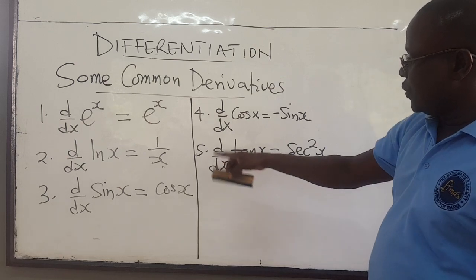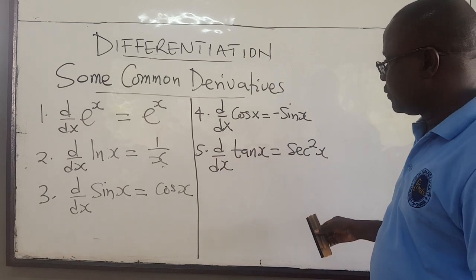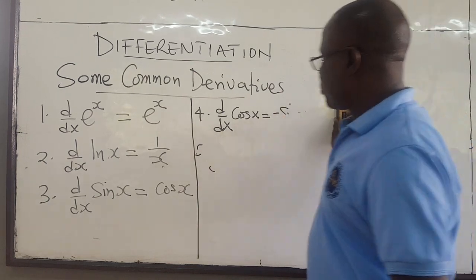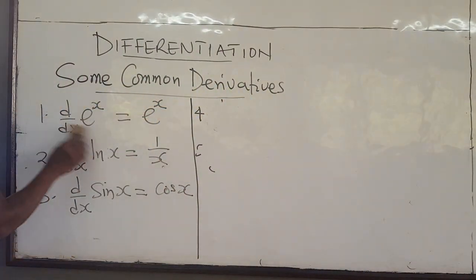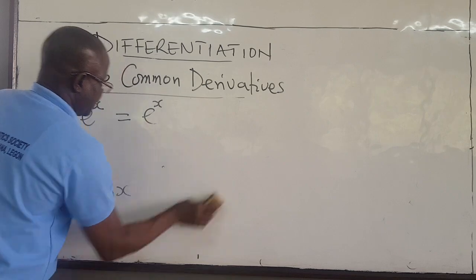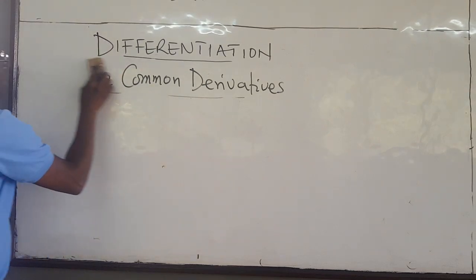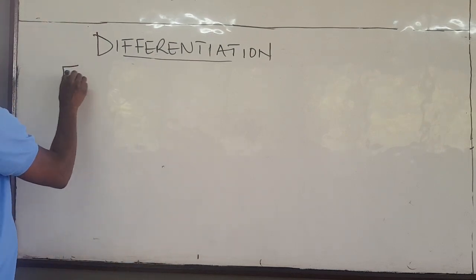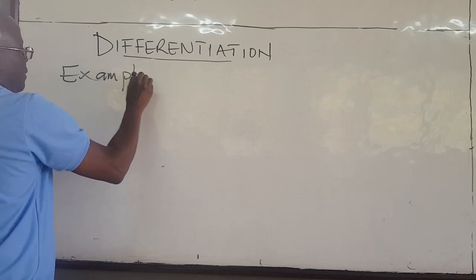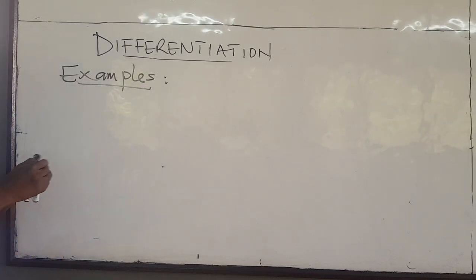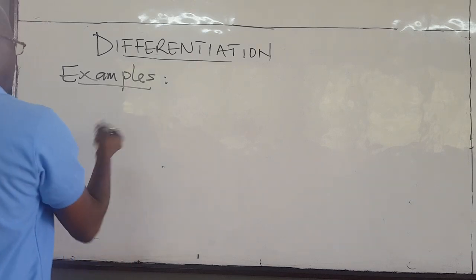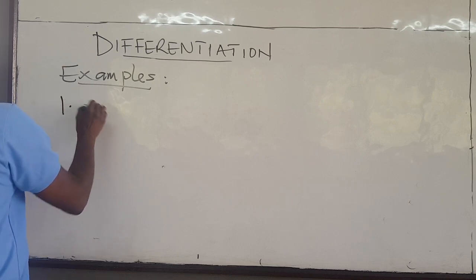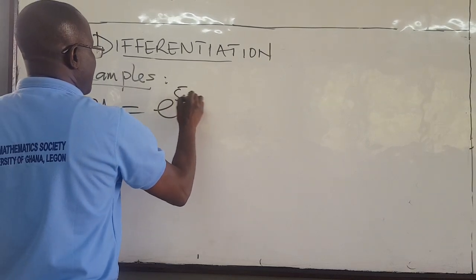We are going to use some of these to do a few examples right now. So suppose now that we know the basic derivatives — the question is how do you find derivatives of more complex functions? We want to look at some examples using some of these common derivatives to solve some problems. We want to evaluate: find dy/dx if y equals e to the 5x.